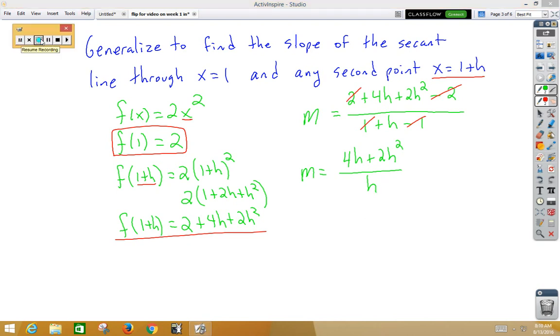That would be a generalized formula for the slope of any second point. If we want to get the slope of the tangent line, then we somehow need to make h zero. We know we can't have a zero on the bottom of a fraction. But if we use our tremendous algebra skills, we can factor on the top. So if I factor out an h, I get 4 + 2h on the inside. I've got an h on the bottom. Now the h's can be removed. So I now have 4 + 2h, and if I make h zero, then I would have a slope of 4. That's the theory that we worked with a little bit in the first week.